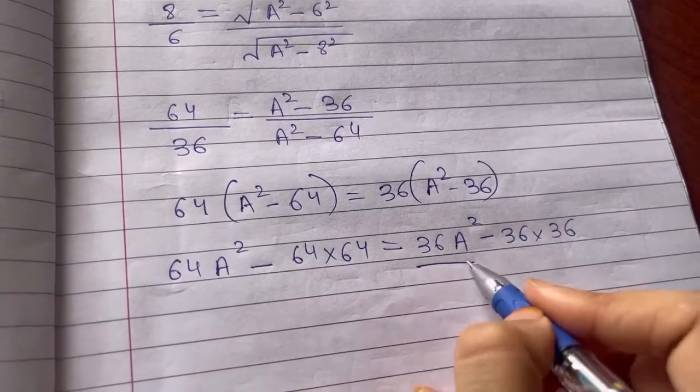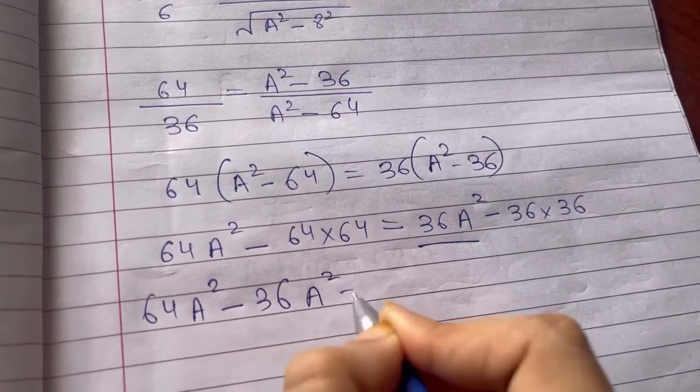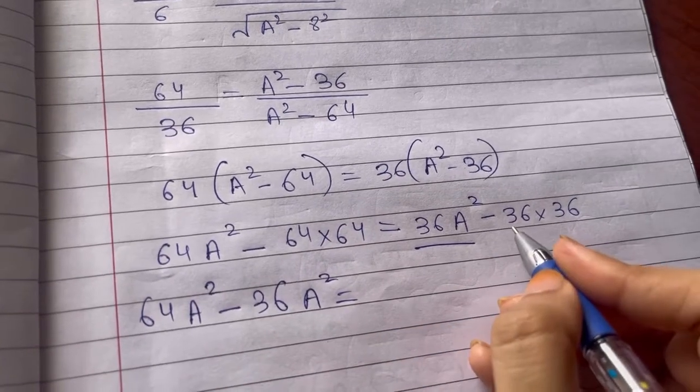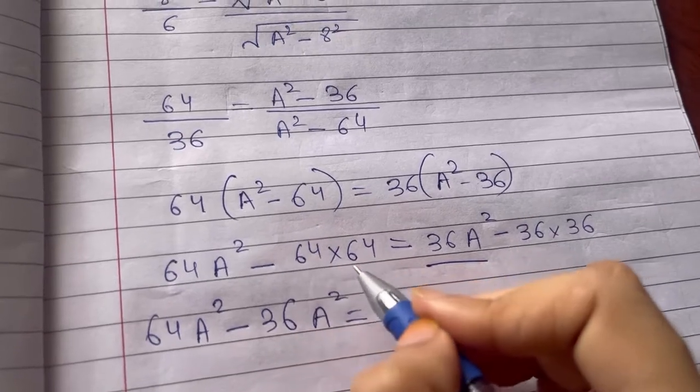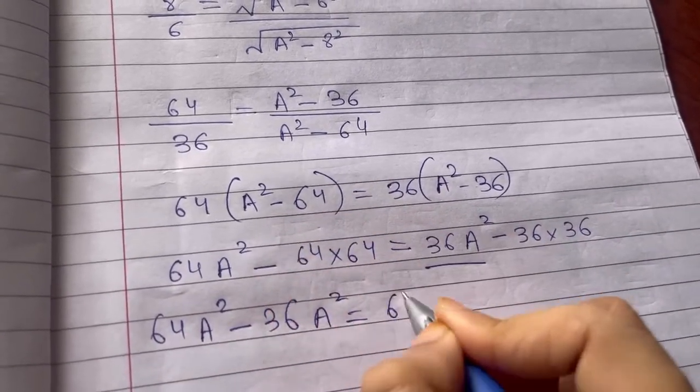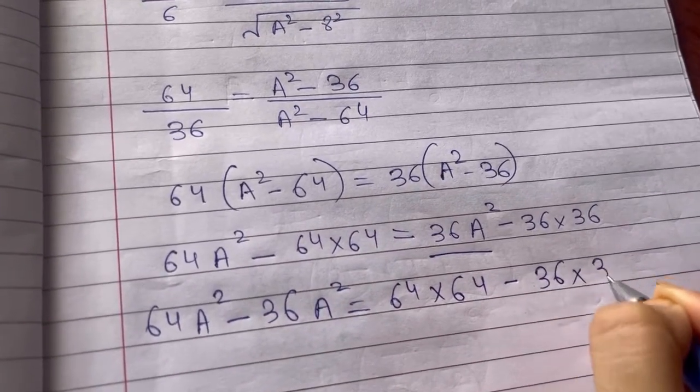Now I will bring this term on the left hand side. So 64 A square minus 36 A square. Here I have minus 64 into 64, which I will take on right hand side. So this minus becomes positive 64 into 64 minus 36 into 36.